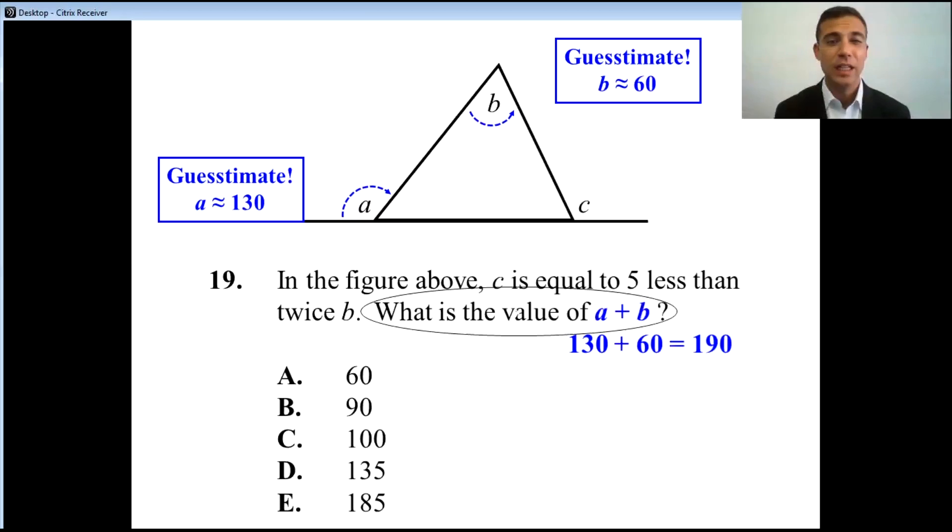Take a look at your triangle. The triangle looks roughly equilateral. Equilateral triangles have 60 degrees on each angle. Now we're not trying to be exact here. We're coming up with a guesstimate. But if A is going to be 130 degrees and B is going to be about 60 degrees, well, what's the value of A plus B? 130 plus 60. That's 190 degrees. Which of these answer choices is even close to 190 degrees? It's going to be E.